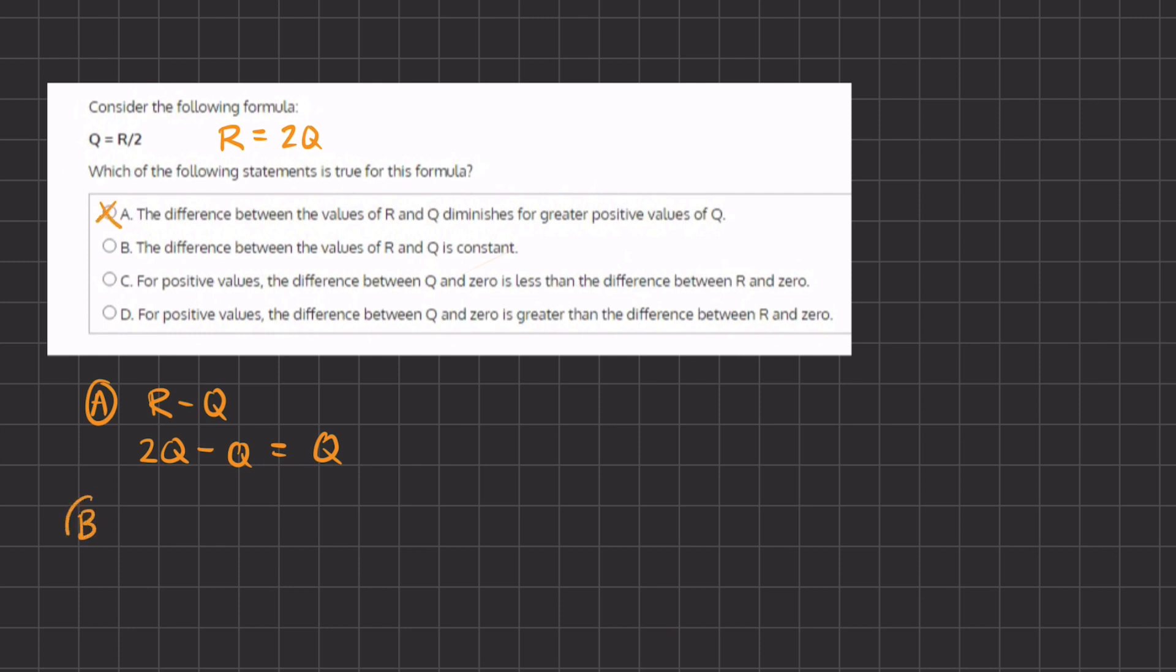Now let's look at option B. The difference between the values of R and Q is constant. Just like we saw above, the difference between R and Q gives us Q, and because Q is a variable and not a constant number, B is eliminated.